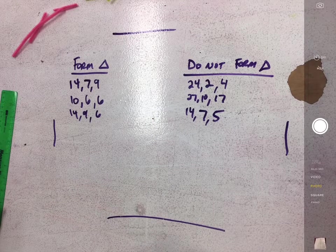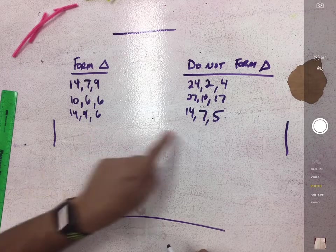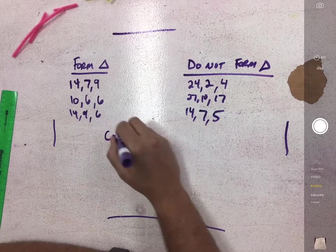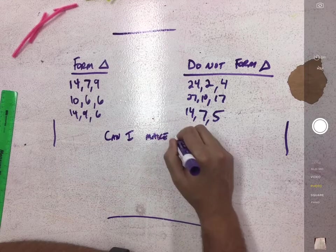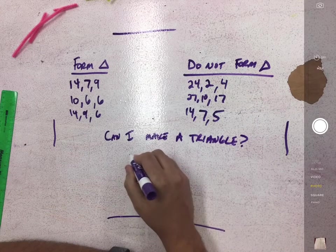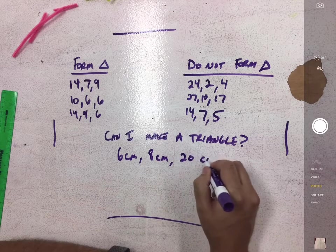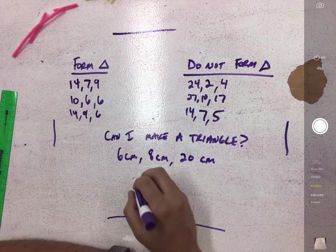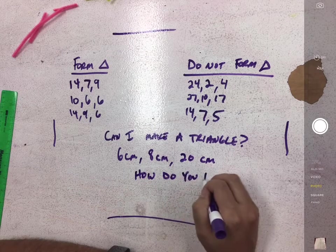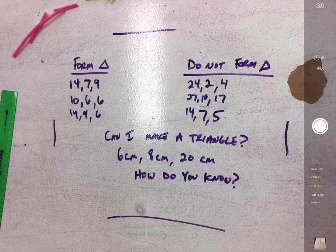All right, so those are the ones that work and the ones that don't work. You should be taking notes so you have those written down. We've got three lengths, three triangles that were formed and three that were not. So the question I'm going to ask you to consider is: can I make a triangle with segments of 6 centimeters, 8 centimeters, and 20 centimeters? And more importantly, how do you know? To get full credit on your homework, you need to have notes and also you need to have answers to both of these questions.